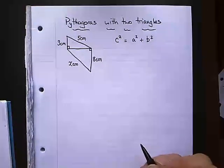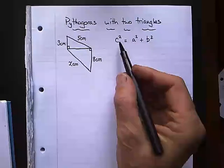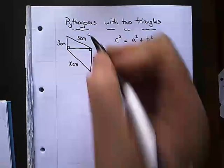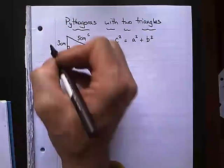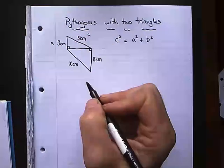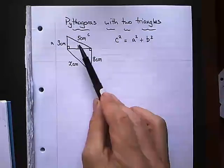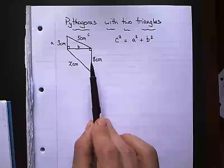So best thing to do as before is to label your side so you know what you're looking at. Remember the longest side is C, the longest side is opposite the right angle so C is where the five centimeters is. A and B, well they're the other two sides so A and B. Because if I can find out what B is then I have two lengths of the other triangle and that's what we need to do.